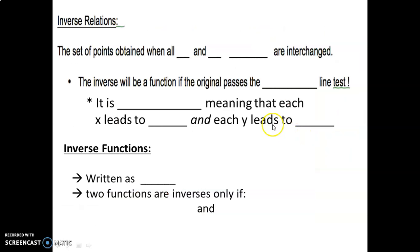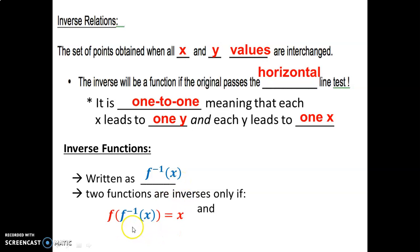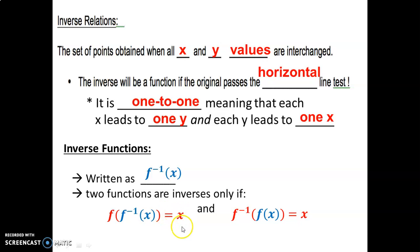Let's add some notes. Inverse relations are the set of points obtained when all x and y values are interchanged. Also, the inverse will be a function if the original passes the horizontal line test and is one-to-one, meaning each x leads to one y and each y leads to one x. Finally, inverse functions are written using the negative-1 notation, and two functions are inverses only if composing one into the other gives x — in both directions.